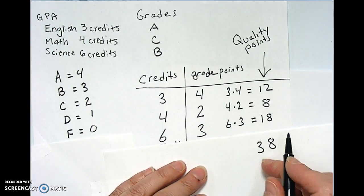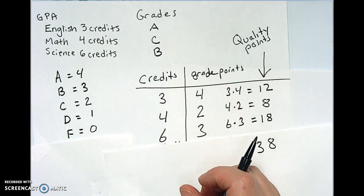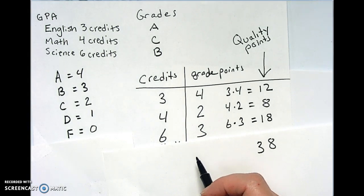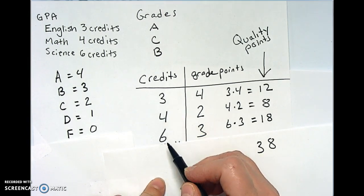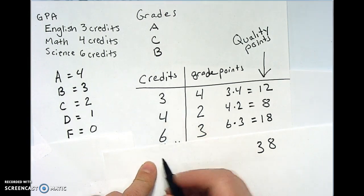Well, do we divide 38 by 3? No. Okay. What do we divide it by? All of the credits that you attempted. Okay, so credits. This one, this is how many credits we got that semester. We added this up earlier and it was 13, right?